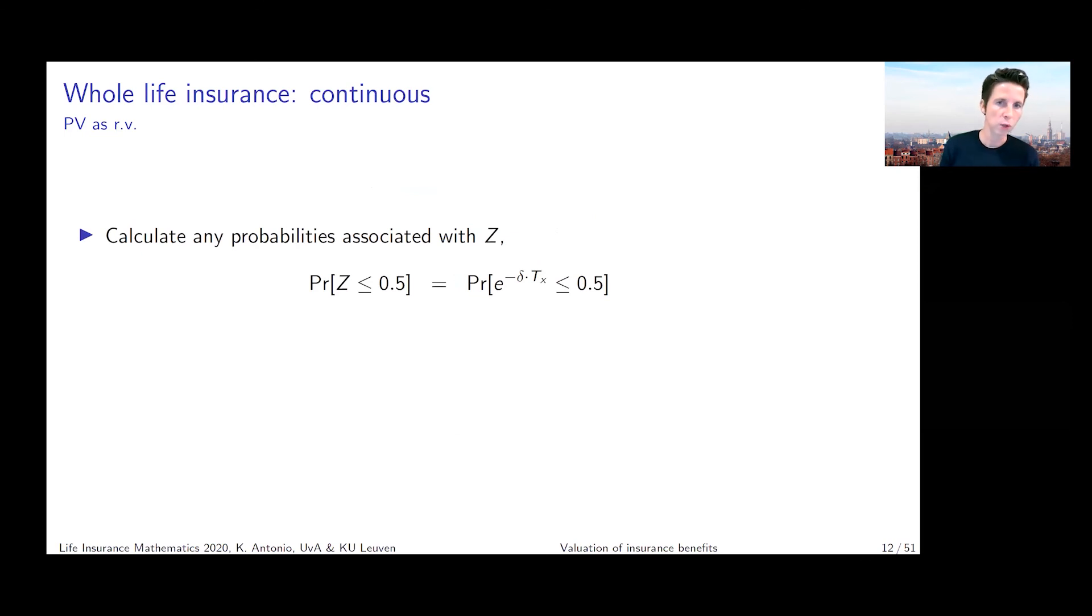For example, what would be the probability that Z is taking a value less than or equal to one half? Then you replace Z with e to the power minus delta Tx. You manipulate the expression, you go to the distribution of Tx because that's what we know from the second chapter. Then you can evaluate your survival function of Tx in this particular value to calculate the requested probability. That's the same as writing upx where u is equal to log 2 divided by delta.